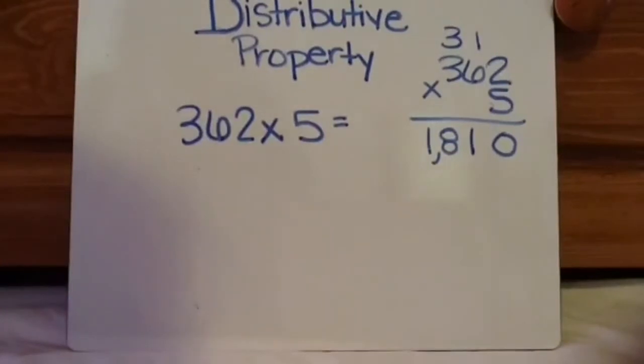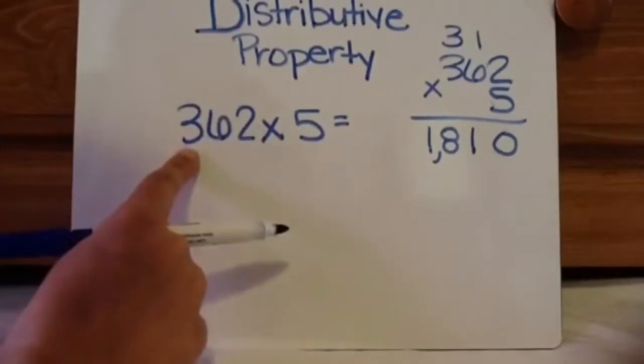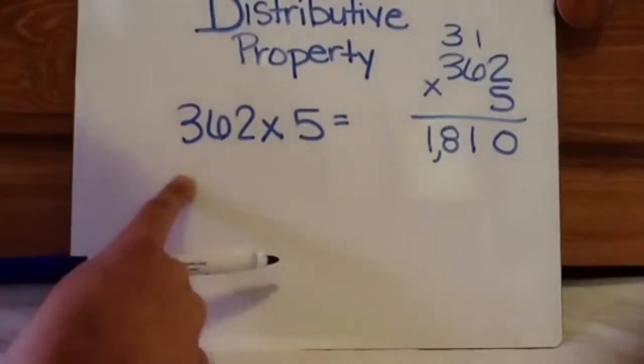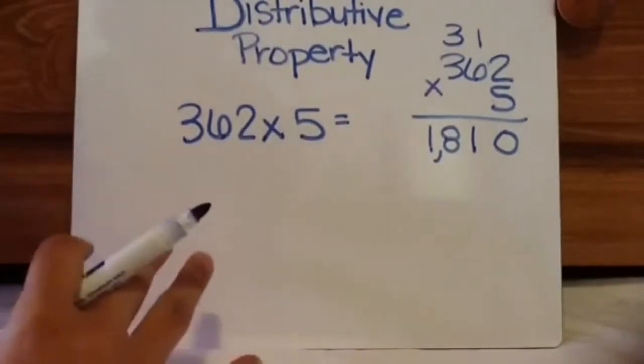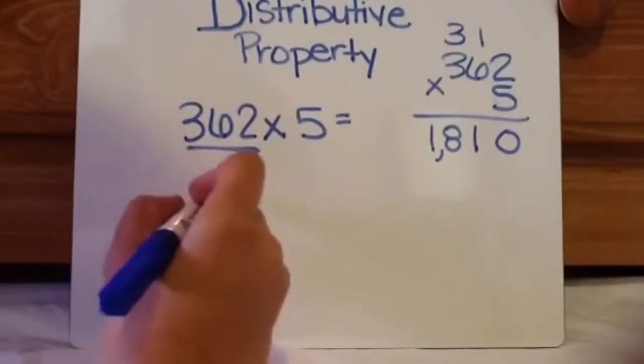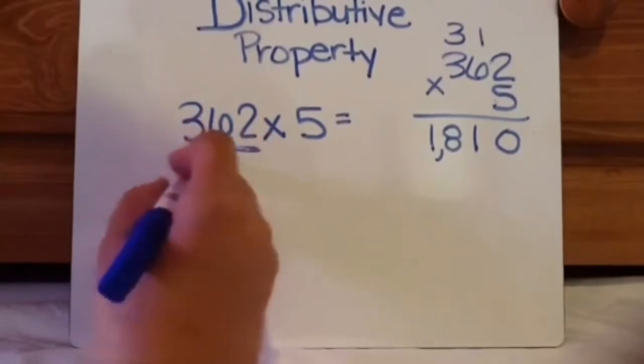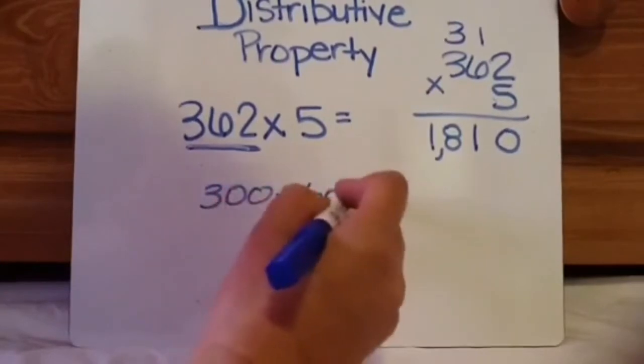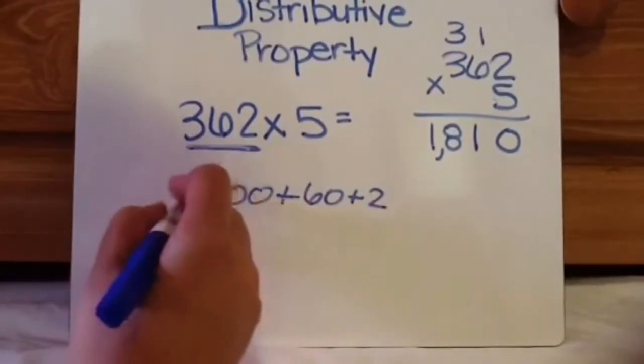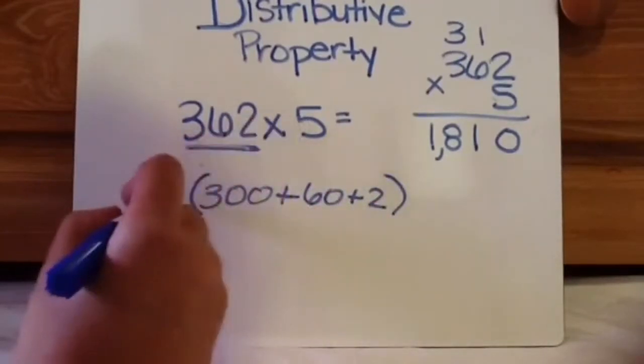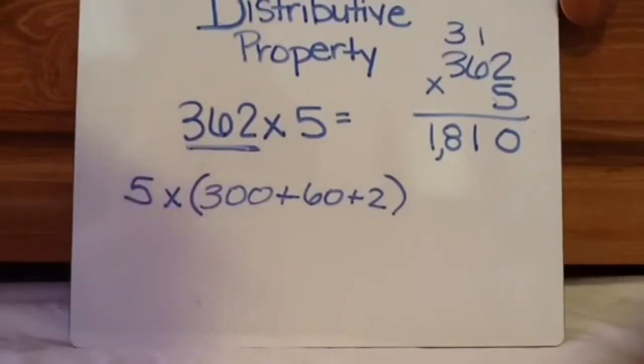You don't always have to do expanded form, but I feel like expanded form is the easiest way. So distributive property is strictly taking this number and breaking it apart using expanded notation. So this, in expanded notation, would be 300 plus 60 plus 2. You're going to put that in parentheses. And then, because this is times 5, you would put the times 5 over here.